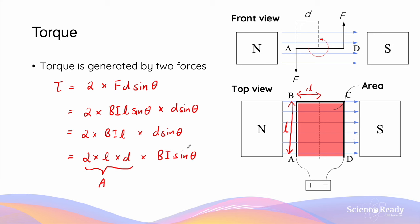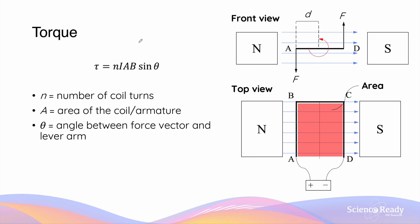If you multiply 2 × L × D, this gives you the area of the rectangle shown in red. So we can say that the total torque acting on the armature is equal to ABI sin theta. In the formula sheet, this is given as torque = NIAB sin theta.